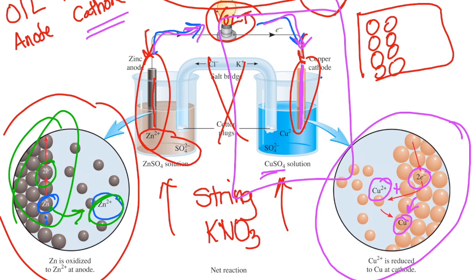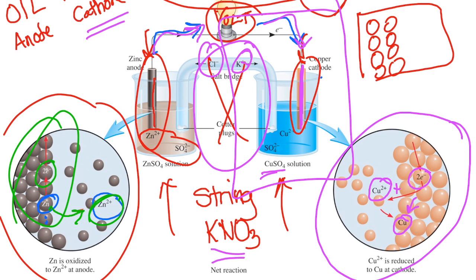What's going on in the salt bridge? Our salt bridge used potassium nitrate; this diagram uses potassium chloride. The salt bridge basically evens out the charges so you don't have a big buildup of positive or negative charges on one side or the other. You don't want charge buildup — that's what the salt bridge does.